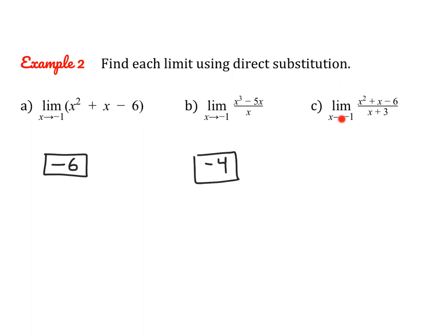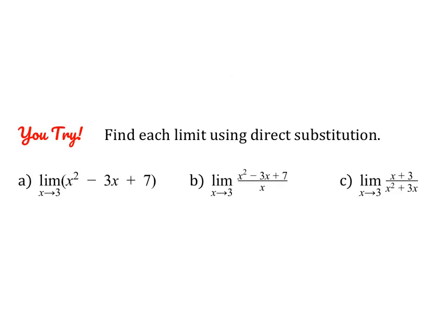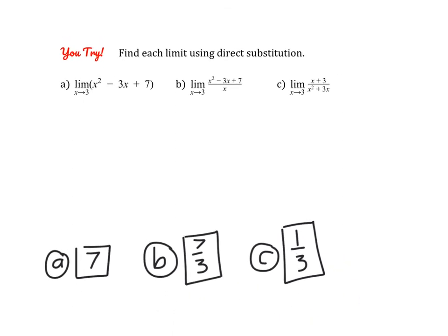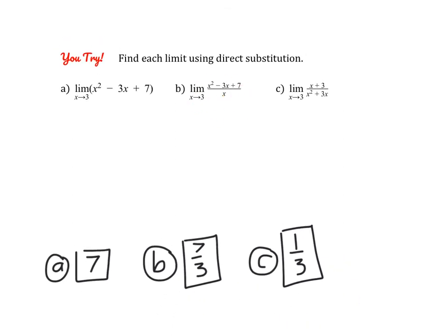For the last one, same thing — check the denominator. Substituting negative 1, the denominator is not 0, so we get something defined. Substituting negative 1 throughout gives us negative 3. So whenever you have a rational function, just make sure the denominator will not turn to 0 when you make your substitution. Other than that, you just plug it in and simplify.